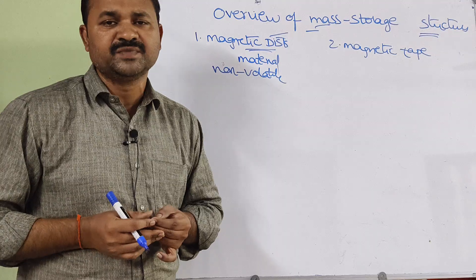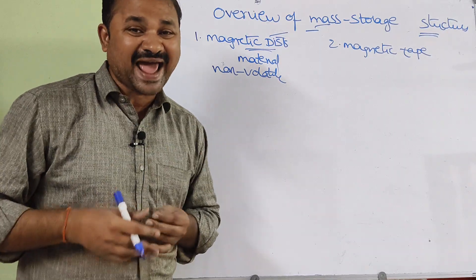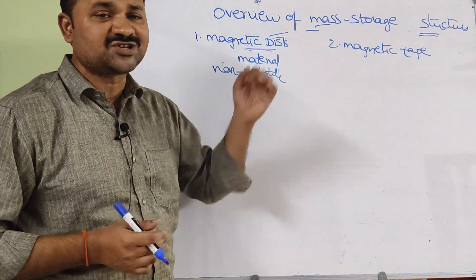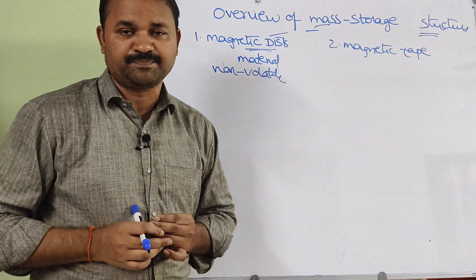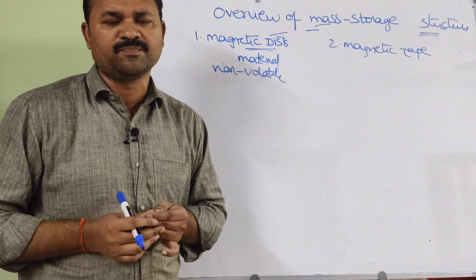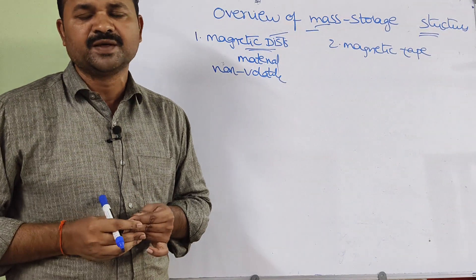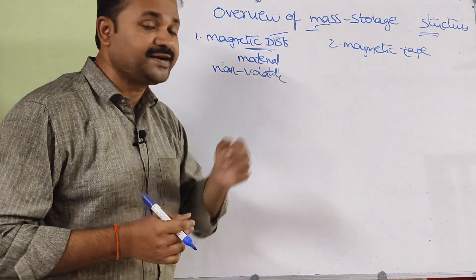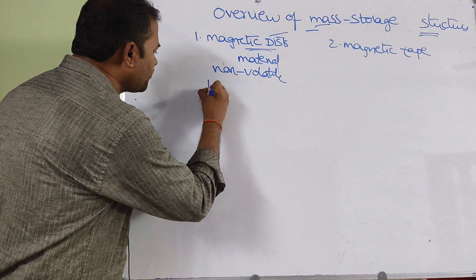Non-volatile means when the power is turned off, the contents won't be lost. In contrast, RAM (main memory) is a volatile memory — when the power is turned off, the contents of RAM are lost. One more important point: the magnetic disk is called a secondary storage device, whereas RAM is called primary memory. This is because the CPU can execute a program only when it resides in main memory. The CPU cannot access the content of the hard disk directly, which is why the hard disk is called secondary memory.